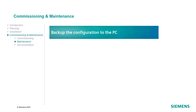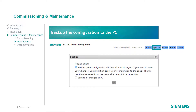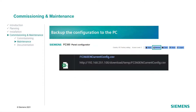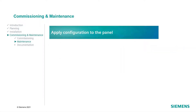To backup the panel configuration, open the FC360 Panel Configurator and select the backup button. Confirm the message and select the backup mode. The backup file will then automatically be downloaded to your computer. The file can be opened and changed in the Desktop Editor. If you would like to apply an existing configuration to your panel, use the Open button of the Panel Configurator to search for configuration files on your computer.